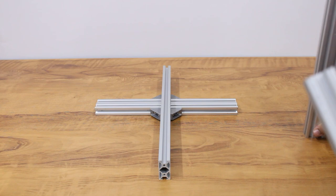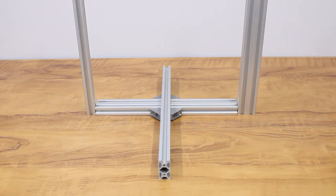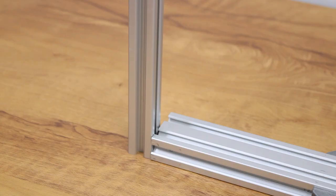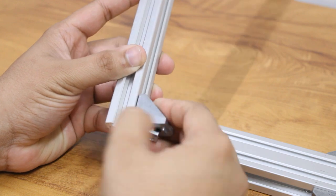Place the 2040 400 mm profile on the right side and 2020 400 mm profile on the left side, both vertical, and fix them using the corner brackets.